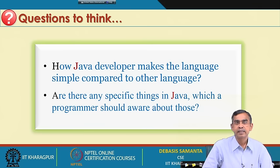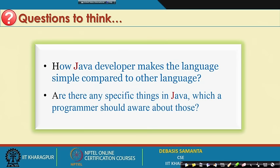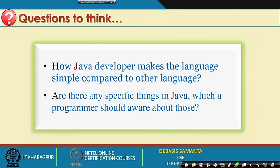There are a few more questions we will discuss in our next class. Java is considered a simpler language compared to others, and there are many detailed things that need to be learned for good programming. We will discuss some important specific things in Java in our next lecture. Thank you very much.